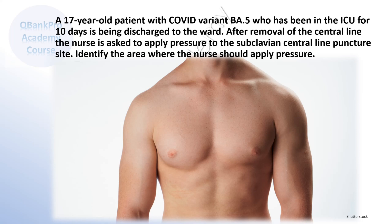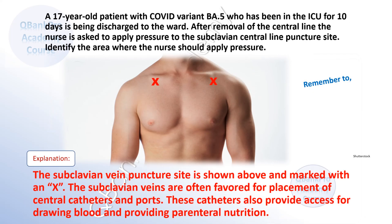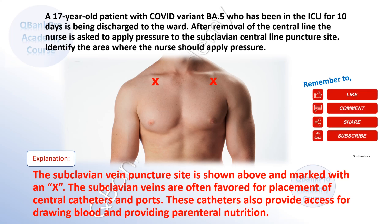A 17-year-old patient with COVID variant BA5 who has been in the ICU for 10 days is being discharged to the ward. After removal of the central line, the nurse is asked to apply pressure to the subclavian central line puncture site. Identify the area where the nurse should apply pressure. The subclavian vein puncture site is shown above and marked with an X. The subclavian veins are often favored for placement of central catheters and ports, which also provide access for drawing blood and providing parenteral nutrition.